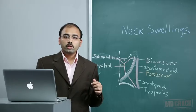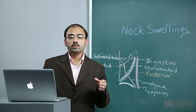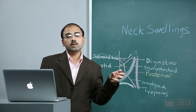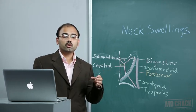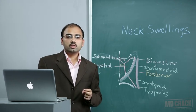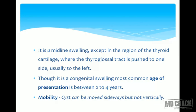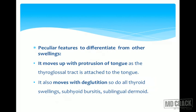Before removing this swelling, you should confirm it is not the only thyroid tissue present. It is a midline swelling, except in the region of the thyroid cartilage where the tract is pushed to one side, usually the left. Though congenital, the most common age of presentation is between two to four years. The cyst can be moved sideways but not vertically.